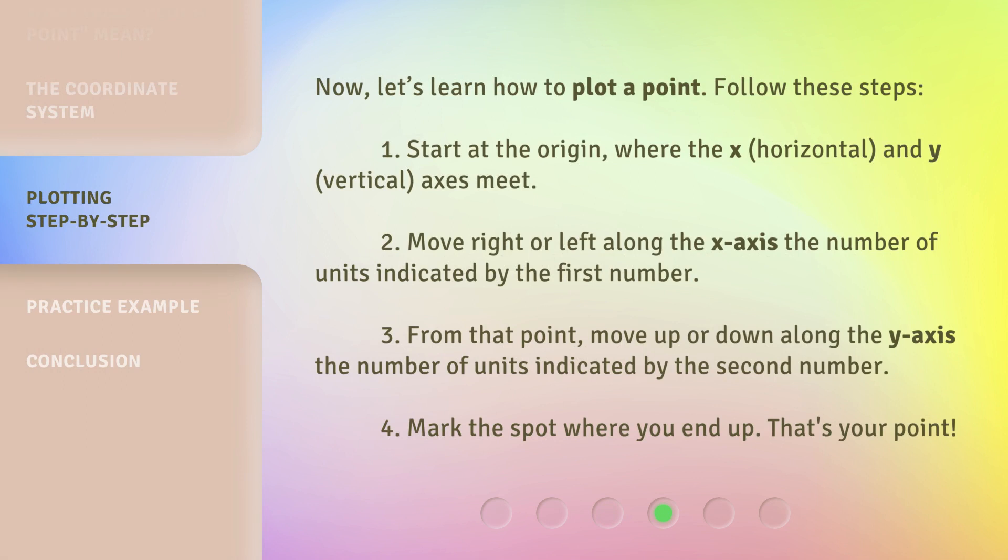Now, let's learn how to plot a point. Follow these steps: 1. Start at the origin, where the x (horizontal) and y (vertical) axes meet. 2. Move right or left along the x-axis the number of units indicated by the first number. 3. From that point, move up or down along the y-axis the number of units indicated by the second number. 4. Mark the spot where you end up. That's your point.